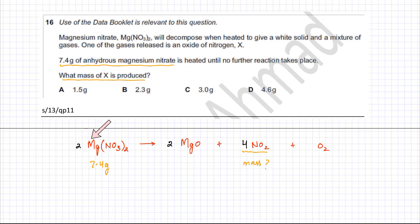Now one of the gases released is an oxide of nitrogen. This is the oxide of nitrogen and this is the substance called X. So this is your X over here. The information provided in the question is that you have 7.4 grams of anhydrous magnesium nitrate. So the mass of magnesium nitrate is known and we need to find what mass of X is produced - the mass of NO2 gas produced.